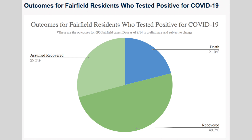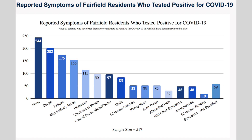The next few graphs are probably some of my favorites. We have the outcomes for Fairfield residents, and you'll see there are three categories: assumed recovery — individuals who have been in our surveillance system for 30 days, or 60 days if they are in a nursing home, with no reported death; recovery — individuals who through monitoring have confirmed they fully recovered from the virus; and then death. The cases still lingering are people who are either still actively ill or haven't met that 30-day or 60-day period yet to assume that they've recovered.